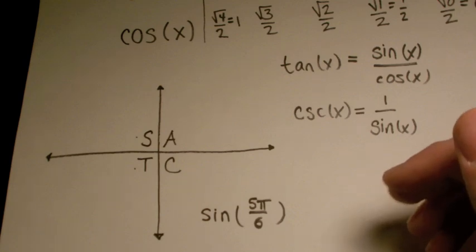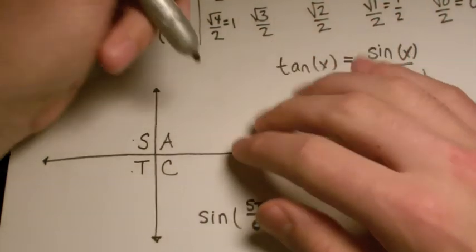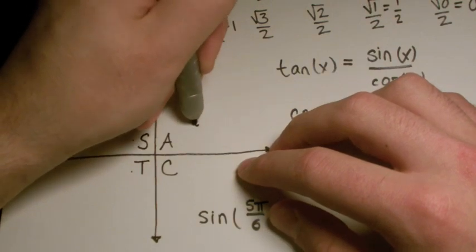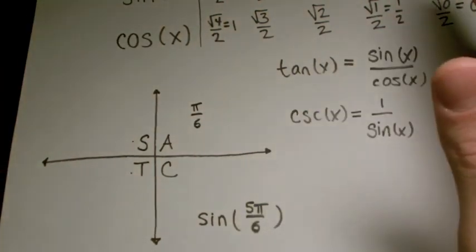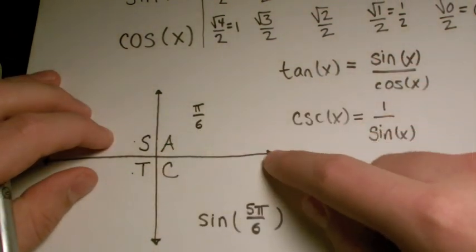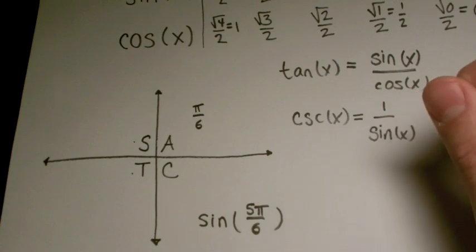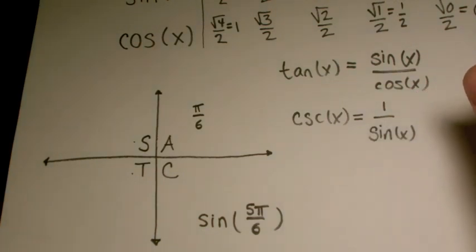So if they ask you sine of 5π/6, how do you calculate that? Here's what you do. You know that π/6 lies within the first quadrant. Okay? It's going to be a 30 degree angle. So it's going to be, you know, somewhere down here. Right above that line right there.